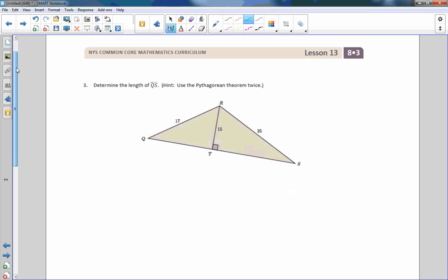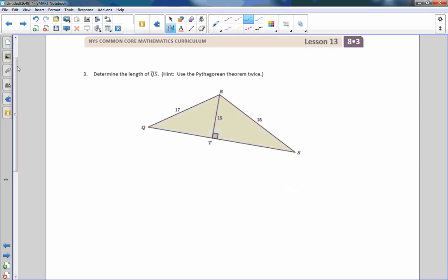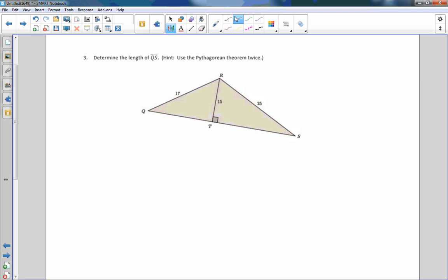Now we have this triangle here. Actually, there's three triangles in this diagram. I have a triangle RTS, which is this one. I have a triangle QTR, which is this one, or you could look at the whole big picture. So there's the green triangle, the red triangle, and the big blue triangle. So there are three triangles here. So what we're going to do is determine the length of QS. I want to know what this long bottom base side is. And they gave us a hint, it says to use the Pythagorean theorem twice.